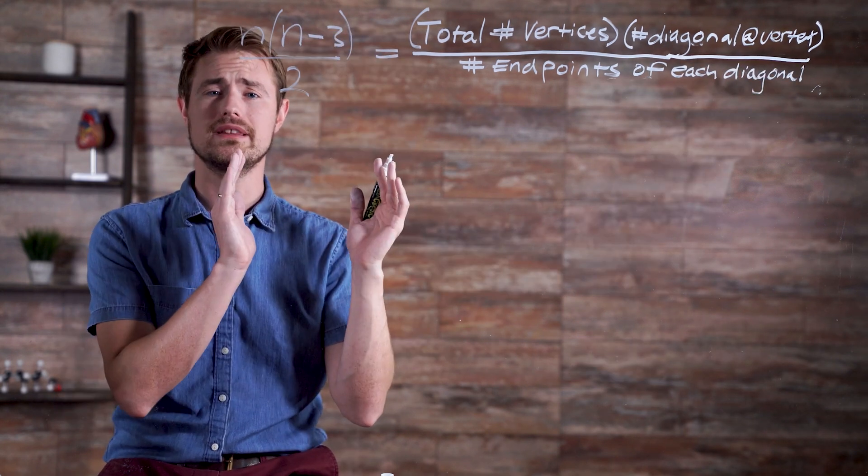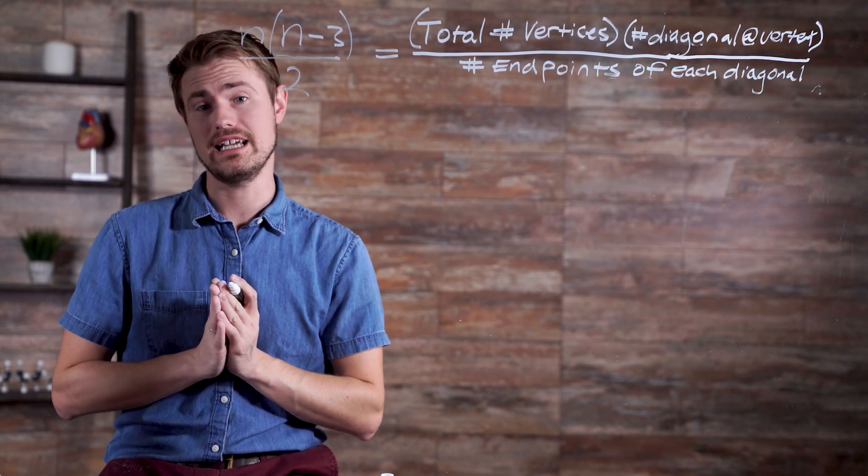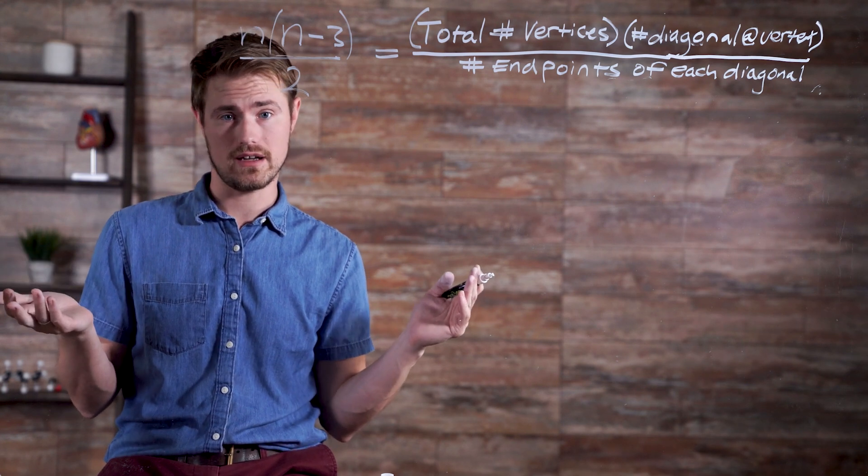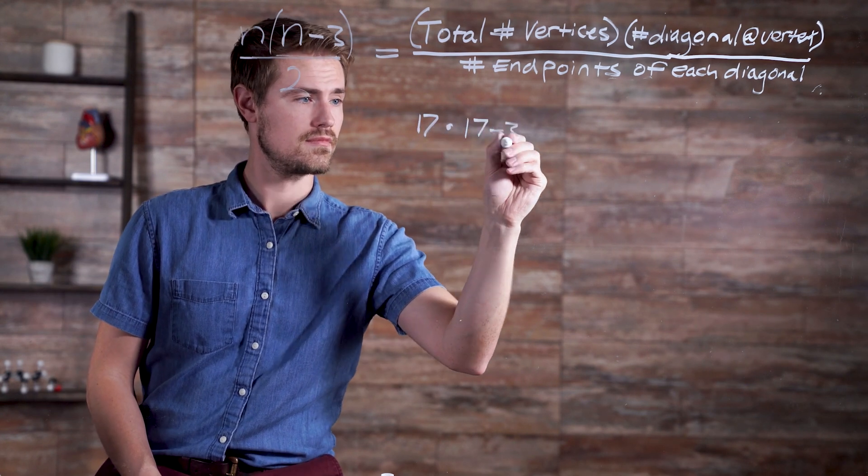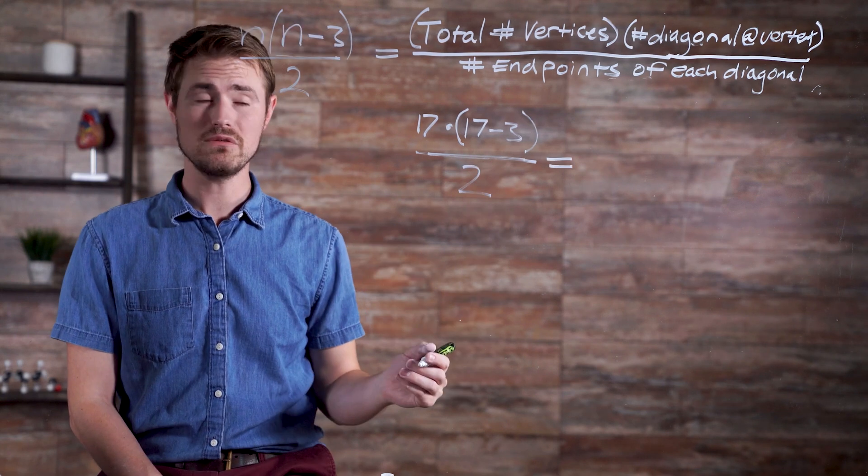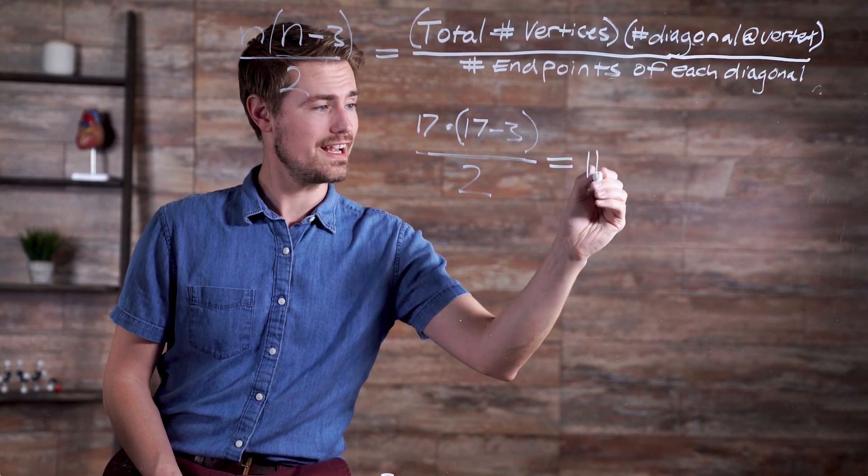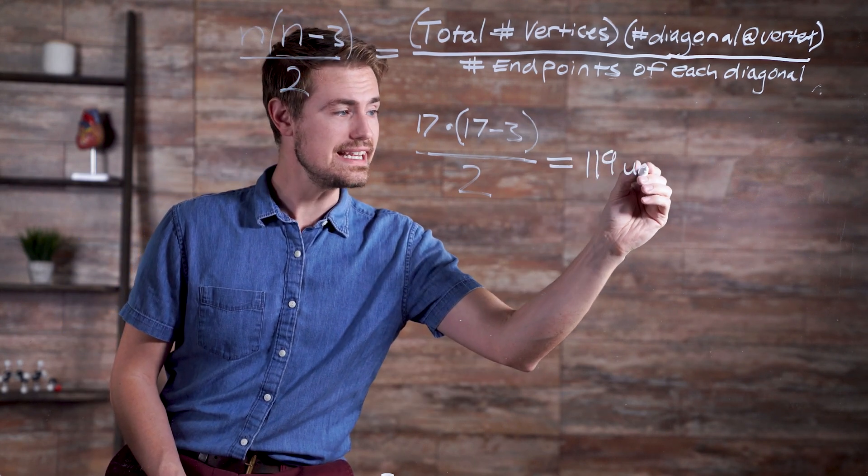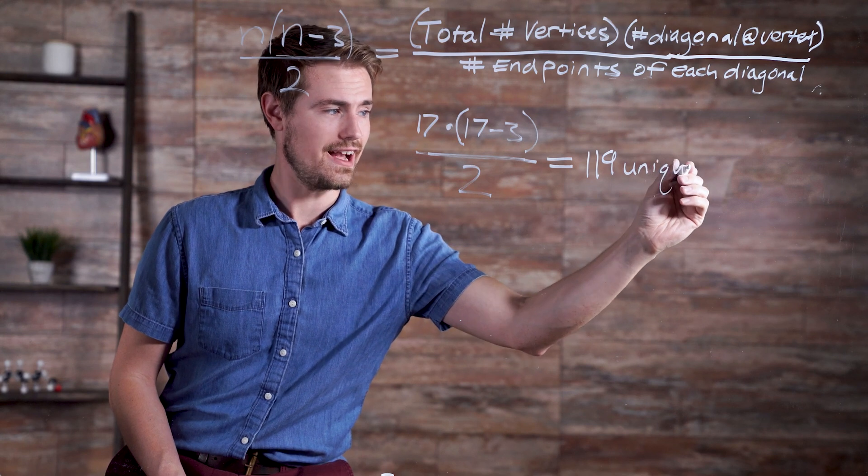Using our formula, we can determine the number of unique diagonals in, for example, a 17-gon. Which is equal to 119 unique diagonals.